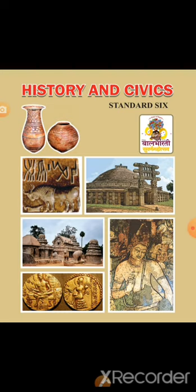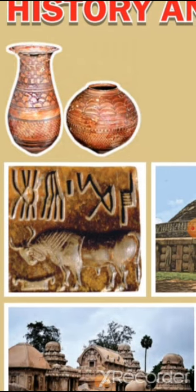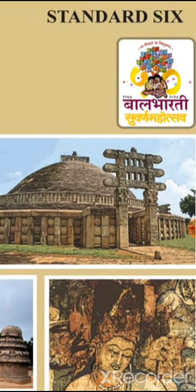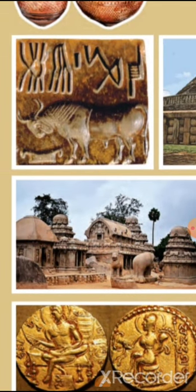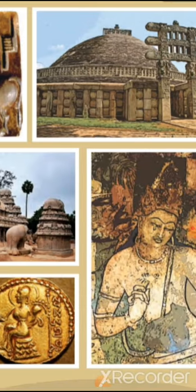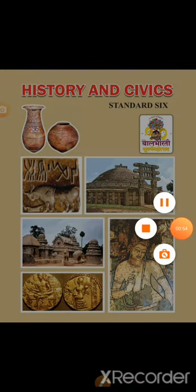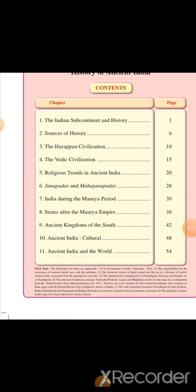Here on this page you can see the first one shown is the seals. On the top there are pots, the Stupa of Sanchi, the Ratna or chariot temples of Mahabalipuram, gold coins of Samudra Gupta, the Bodhisattva of Padma Pani from Ajanta. There are a total of 11 chapters, and we will cover the first 5 for the first term.